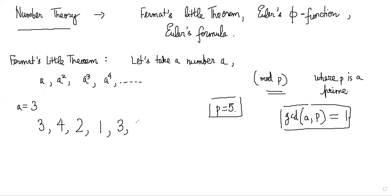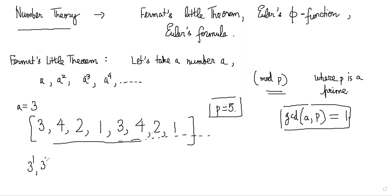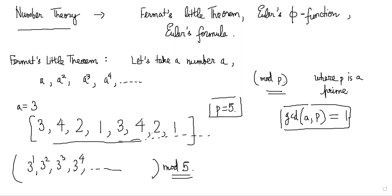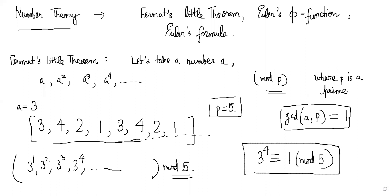And 3⁶ = 729 mod 5 is 4 again, so you can see a repetition. As you go to higher powers you get 2 and 1 again. Are you understanding this pattern? I'm taking 3 to power 1, 2, 3, 4 and so on all modulo 5 where p is a prime number. What you notice is that 3⁴ ≡ 1 mod 5.